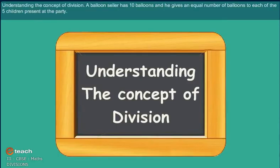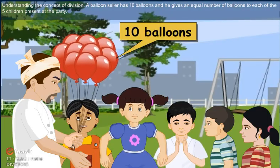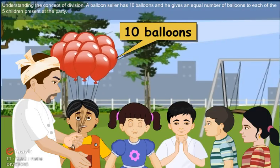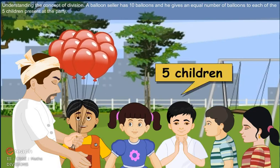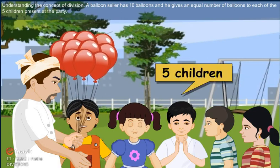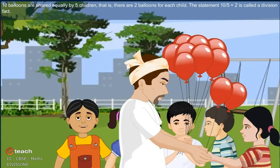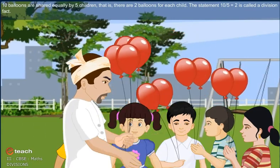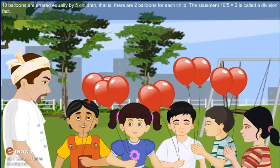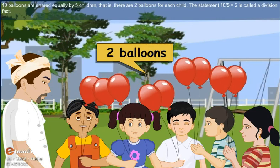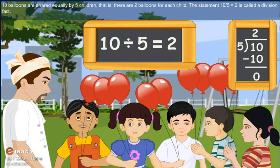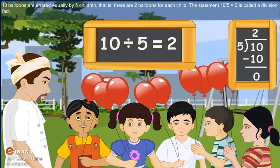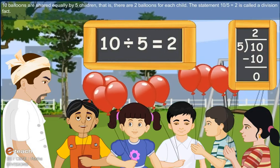Understanding the concept of division. A balloon seller has 10 balloons and gives an equal number of balloons to each of 5 children present at the party. 10 balloons shared equally by 5 children means 2 balloons for each child. The statement 10 divided by 5 equals 2 is called a division fact.